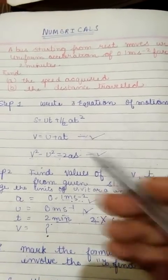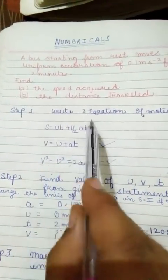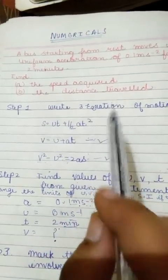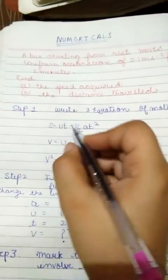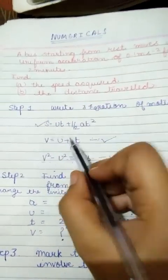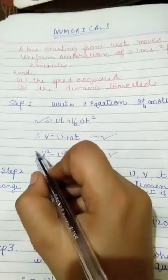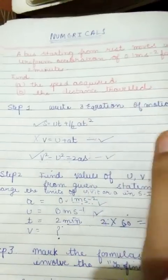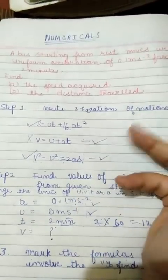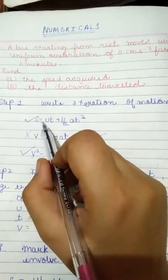Now, check out what we have to find next. We have to find next the distance travel. So mark the formula which involved s, that means distance. This first expression have s, mark it. Second expression doesn't have s, cross. Third expression involved s, we mark that.